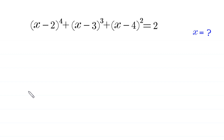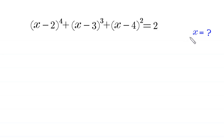Hello everyone, you are welcome to how to solve this very nice algebra equation: x minus 2, whole to the power 4, plus x minus 3, whole cubed, plus x minus 4, whole squared, is equal to 2. We need to find all possible values of x.